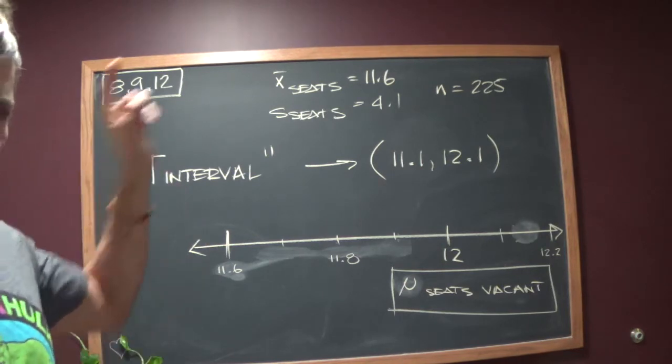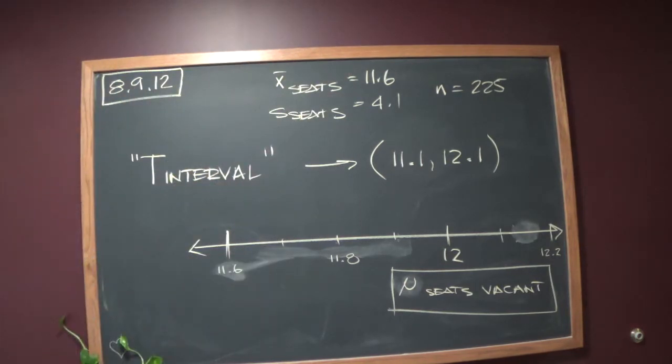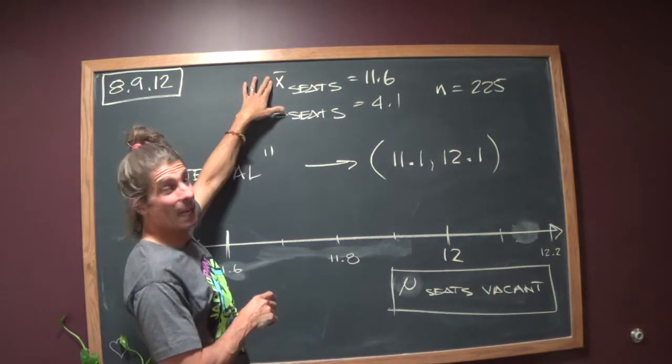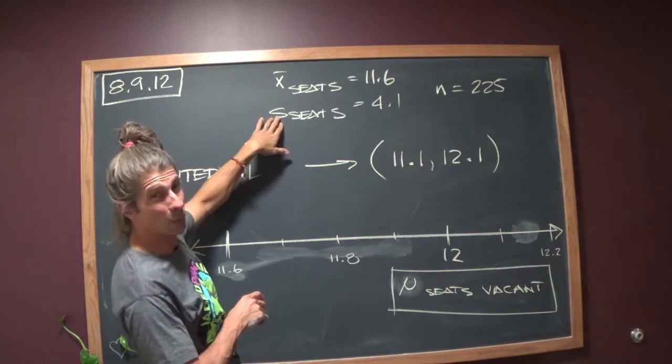What they did was they went ahead and surveyed 225 of their flights, I'm assuming randomly, yeah, randomly selected. On average there were 11.6 seats empty plus or minus 4.1.